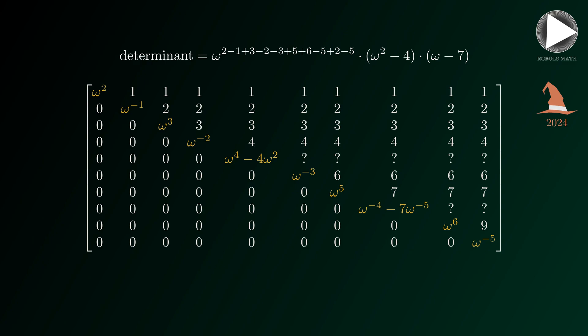Hence, the determinant is equal to the product of omega squared, omega minus two, omega plus two, and omega minus seven.